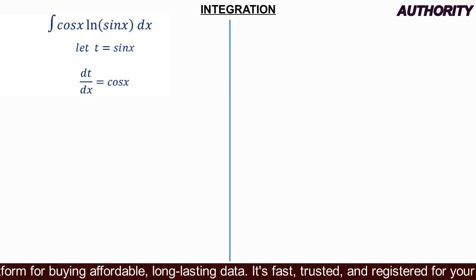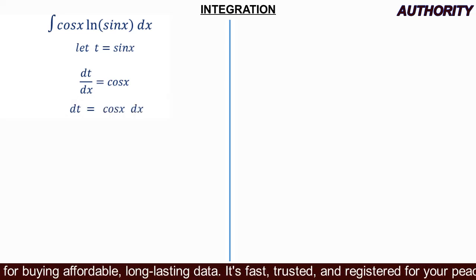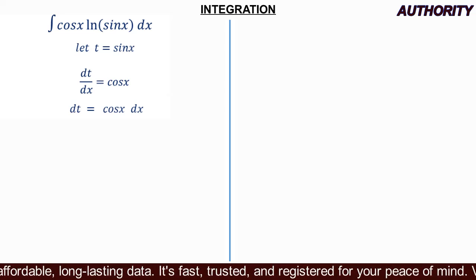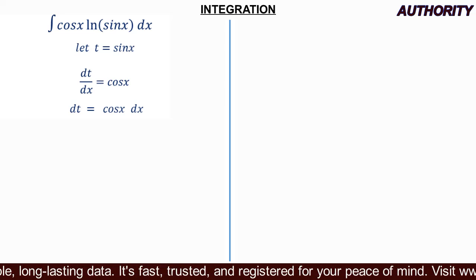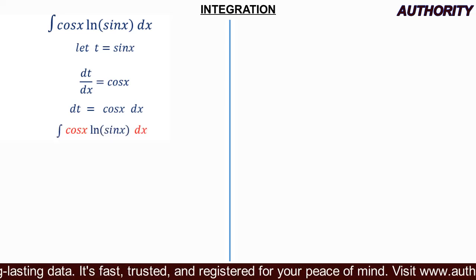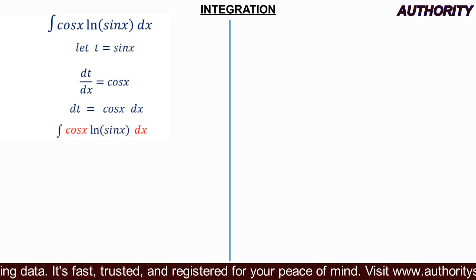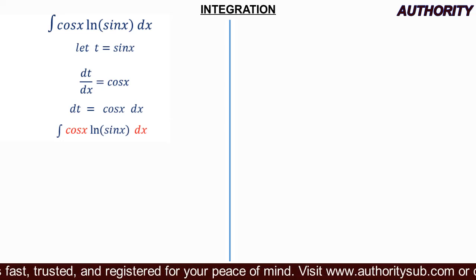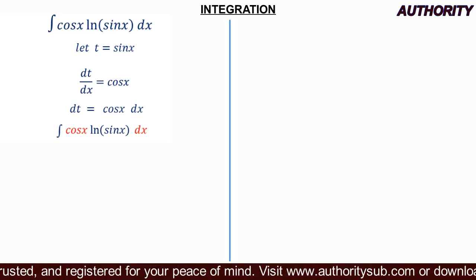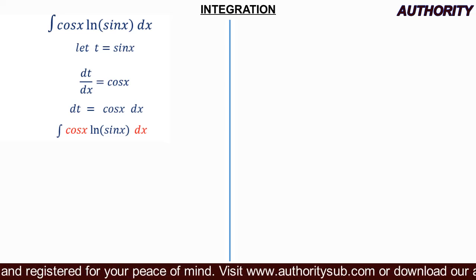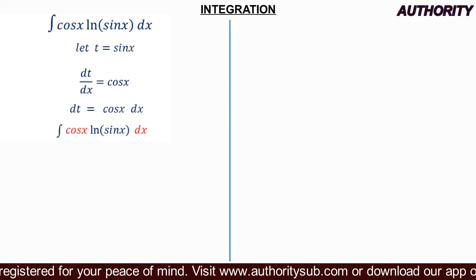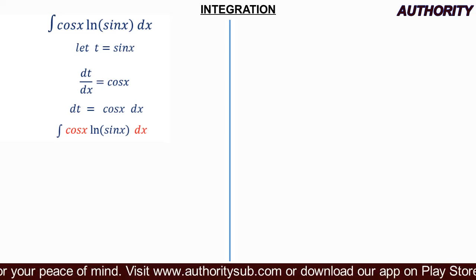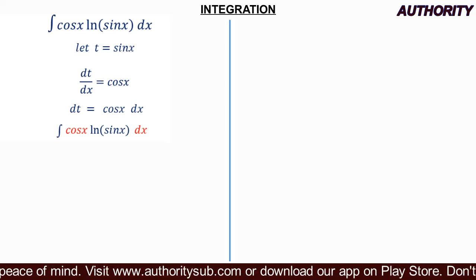Cross multiplying gives us dt = cos(x)dx. Now in the integral of cos(x)·ln(sin(x))dx, we want to replace sin(x) with the letter t and remove everything in terms of x. That is the goal of substitution.